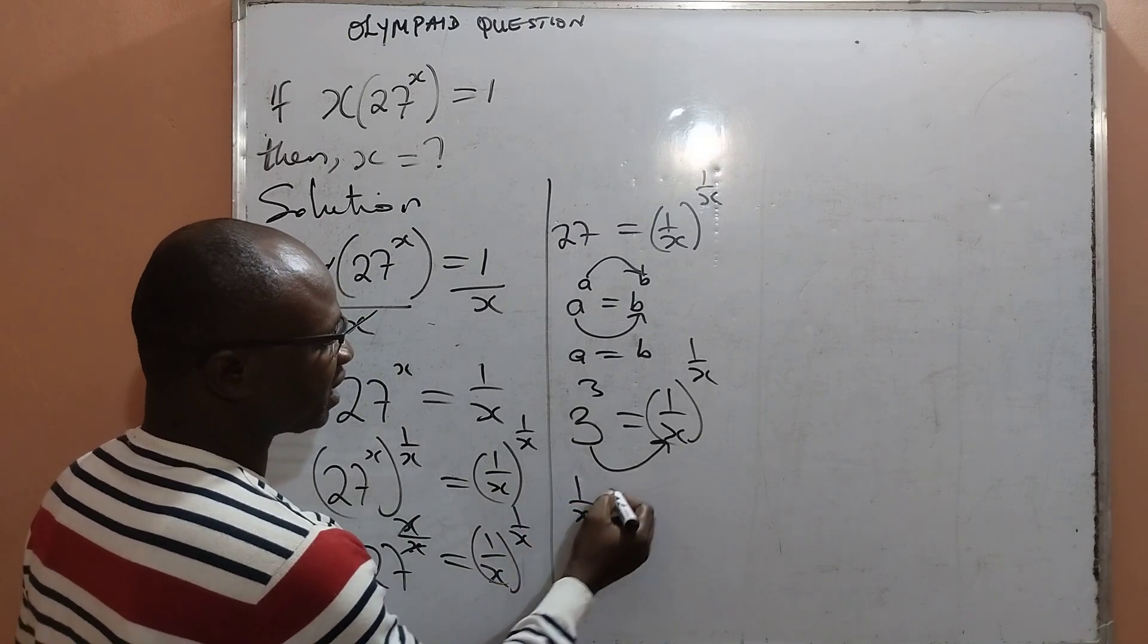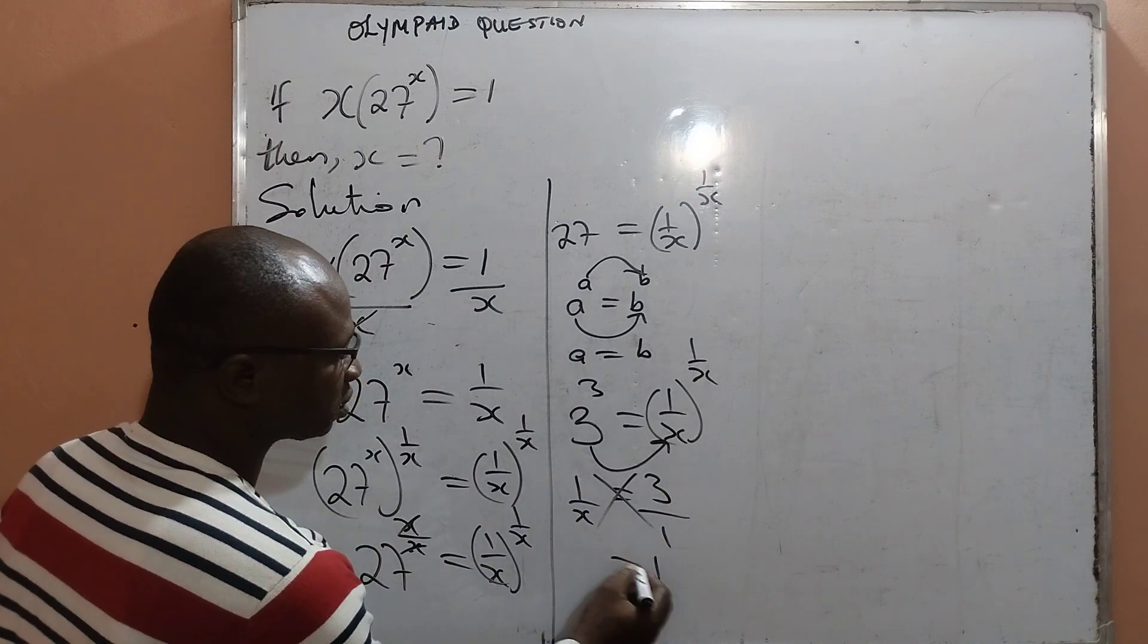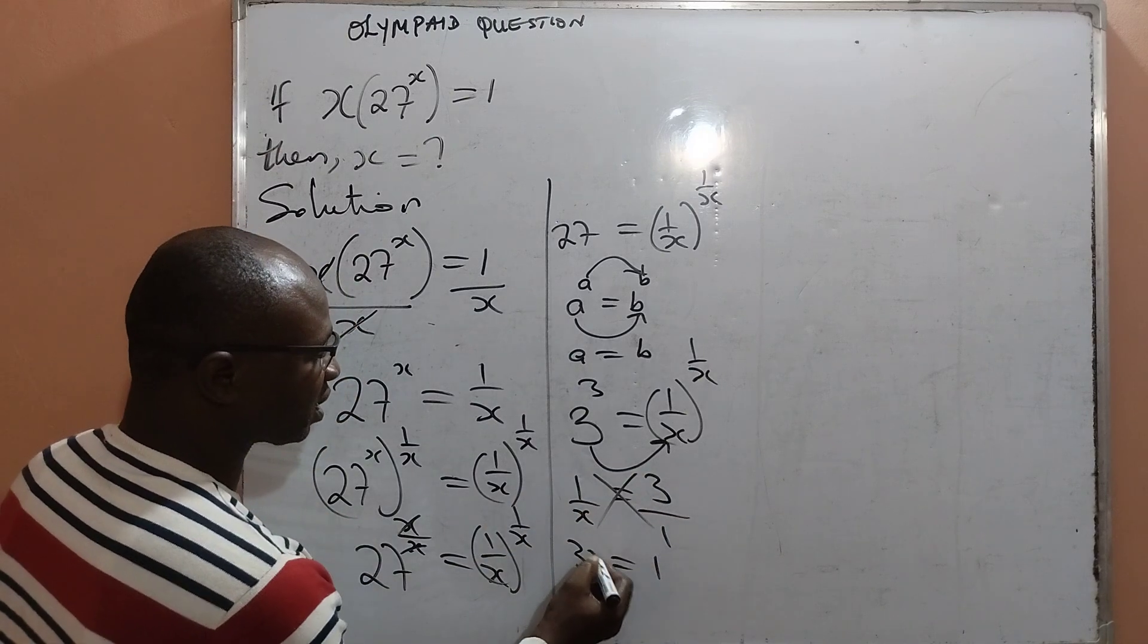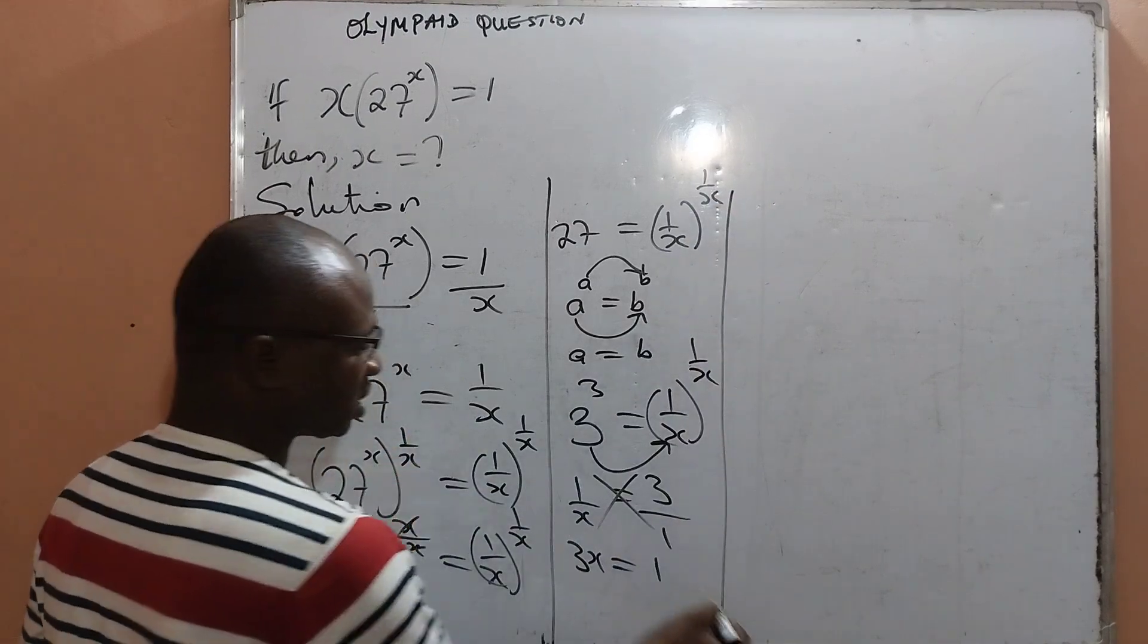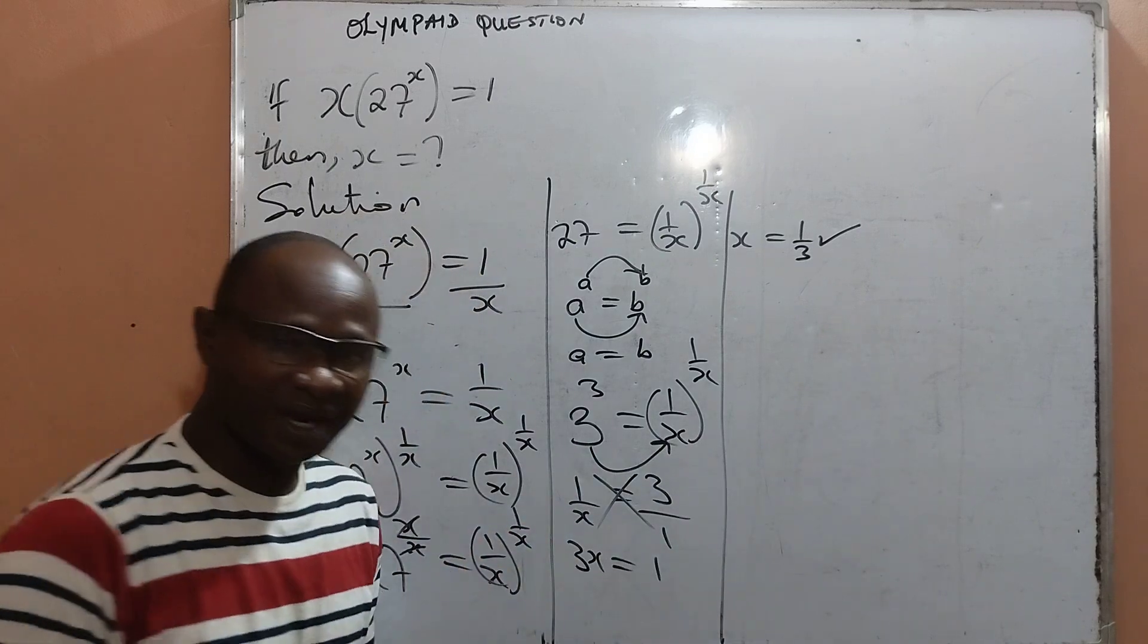Therefore, 1 all over x is equal to 3. And by cross multiplication, 1 times 1 is 1 and x times 3 will give me 3x. This means that x will now be equal to 1 all over 3 as the final answer.